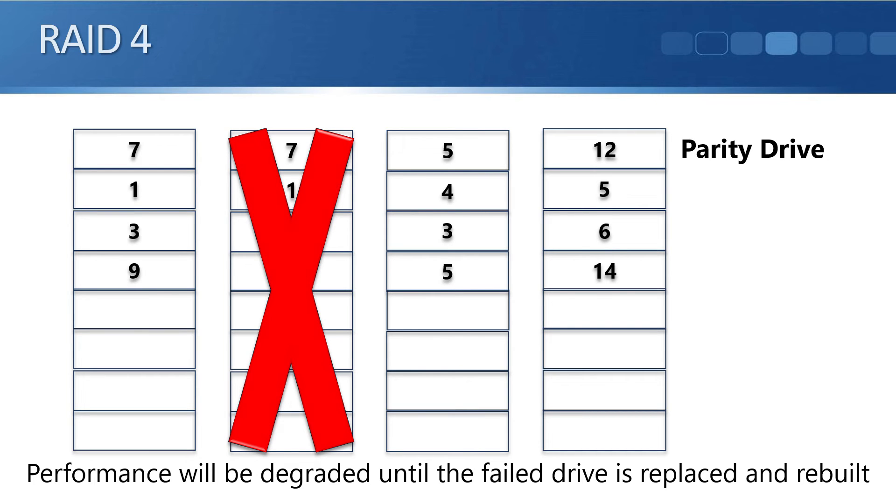So when we do replace it, we put a new disk in. And from parity, it knows it must have been a 7, a 1, a 3, and a 9. So it can rebuild the same data on that disk. We can do that automatically from RAID without having to recover from a separate backup.